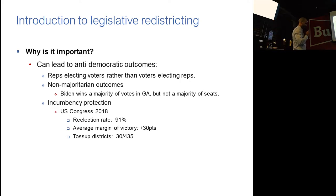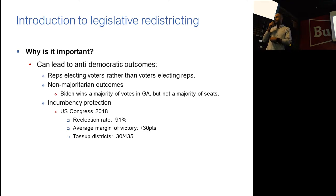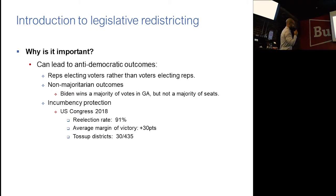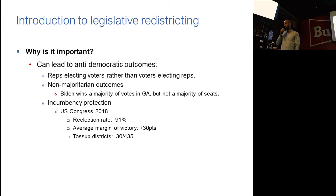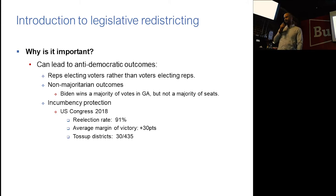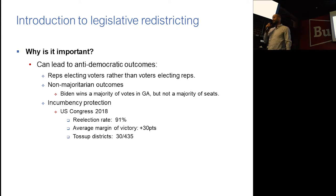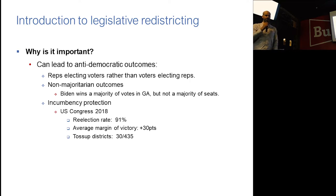Incumbency protection has been a huge criticism of redistricting — that legislators can choose their constituency and therefore make it easier for themselves to be re-elected. Some people think this might be why we have such high re-election rates in the United States. In Congress in 2018, we had a re-election rate of 91%, and it's above 90% almost every single year. The average margin of victory in 2018 was plus 30 points. There were about 30 of the 435 congressional districts that we could classify as toss-ups. So there is a lack of partisan competition in the House, and a lot of people think that's because legislators are drawing themselves safe seats.